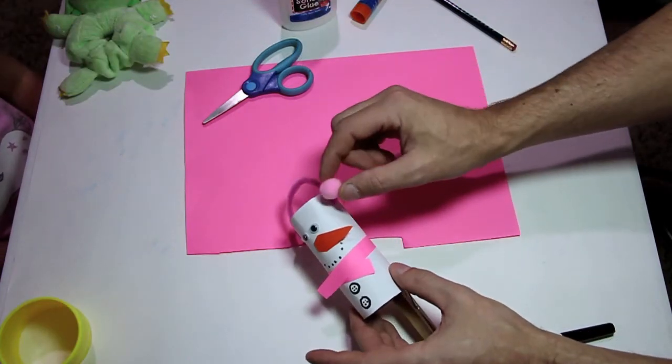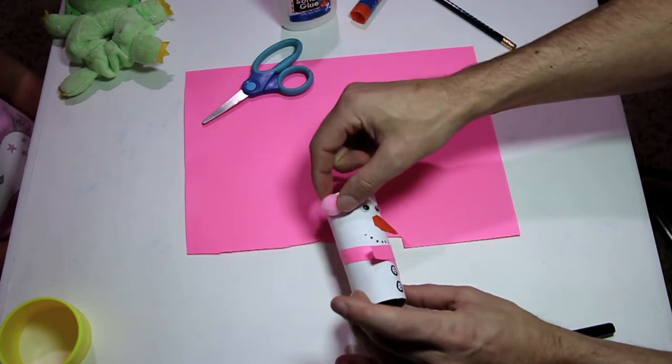Now our pipe cleaner is glued on. We're going to glue the pom-poms on, just in front on each side. And now we've glued the earmuffs on. That completes our snowman.